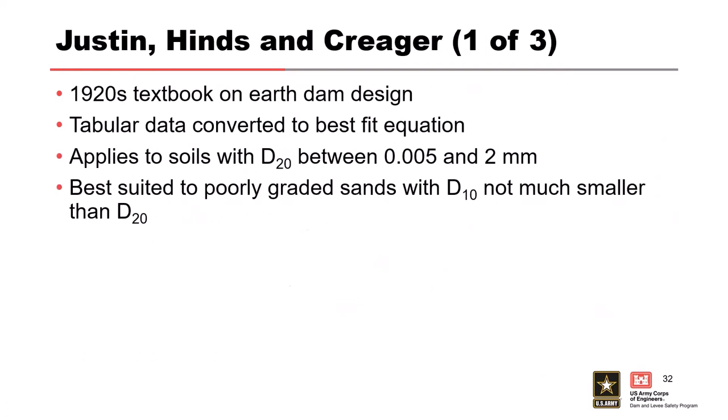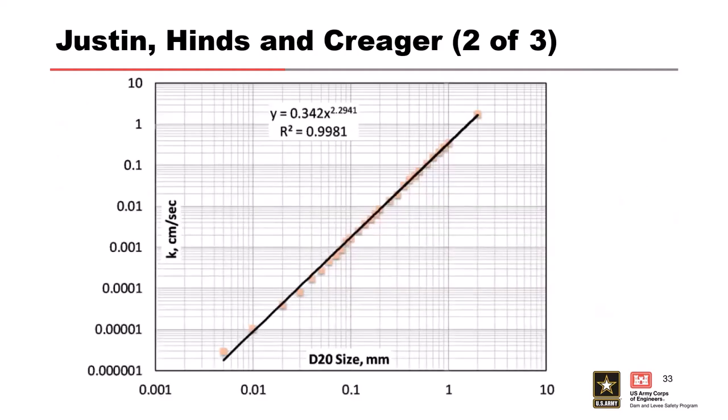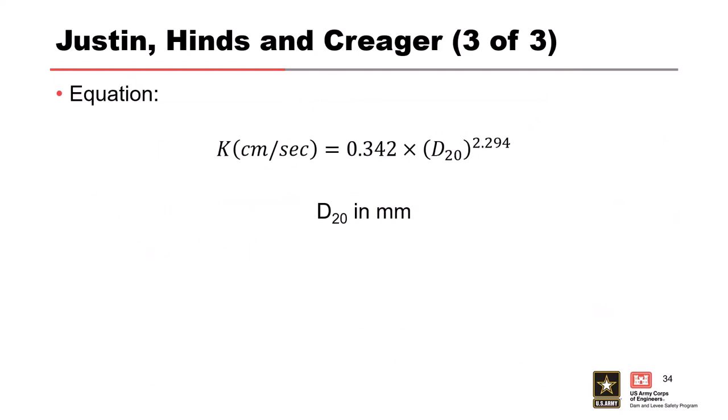One final relationship is between hydraulic conductivity and D20 of the material. Data was originally in tabular form and converted to a best-fit equation. This method is really suited to poorly graded sands — with a D10 not much smaller than a D20. The applicable range for D20 is 0.005 to 2 millimeters — still looking at fine sands. The best-fit equation plots D20 on the x-axis and permeability on the y-axis.